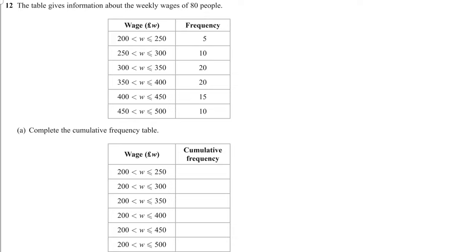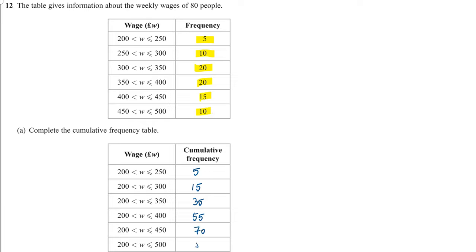Question 12. The table gives information about the weekly wages of 80 people. Complete the cumulative frequency table. The first number is 5. Adding on successive frequencies: 5 plus 10 is 15; 15 plus 20 is 35; 35 plus 20 is 55; 55 plus 15 is 70; 70 plus 10 is 80.